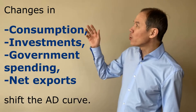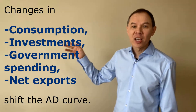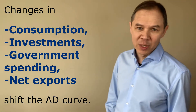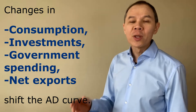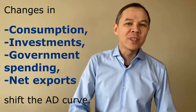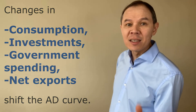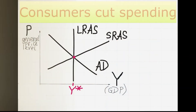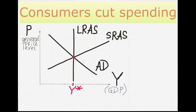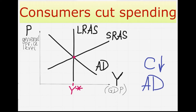The AD curve shifts every time one of these factors changes: consumption, investments, government spending, or net exports. Every single time you see an event that changes any of these, you need to shift the AD curve. For example, if consumers become pessimistic and cut their spending, then consumption will fall, aggregate demand will fall, and the AD curve will shift to the left.